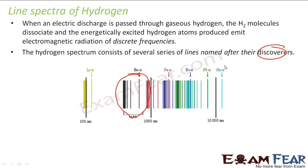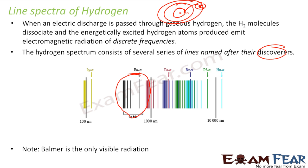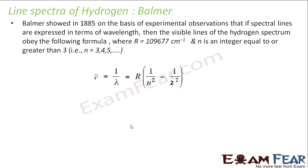When the electrons want to come down to their natural state — the low energy state — they emit a spectrum of photons. Please note once again that Balmer is the only visible radiation, and since Balmer is the only visible radiation, that was the first series to be discovered.